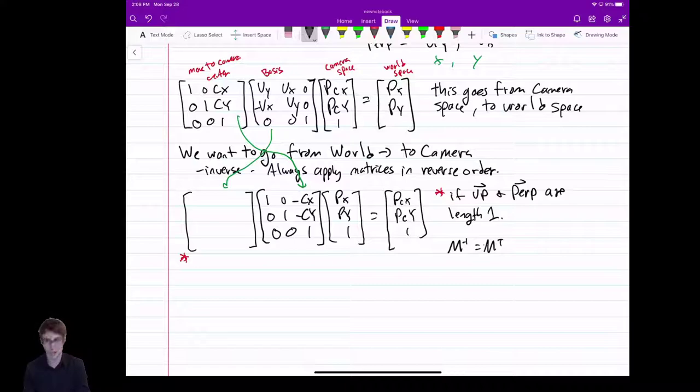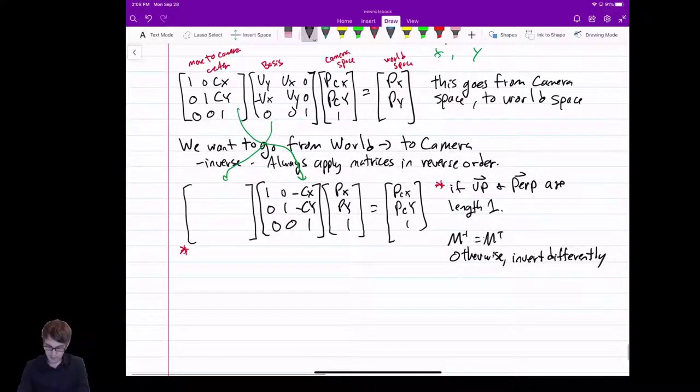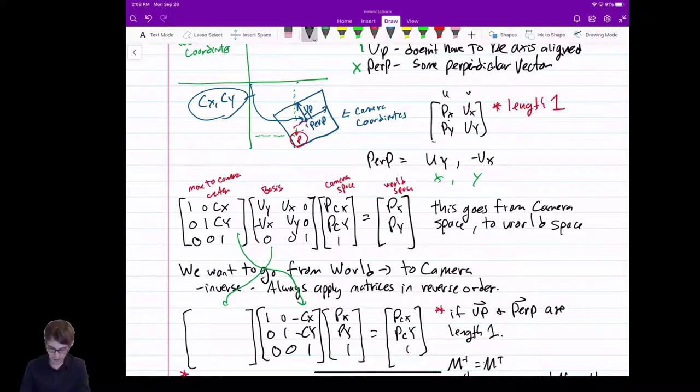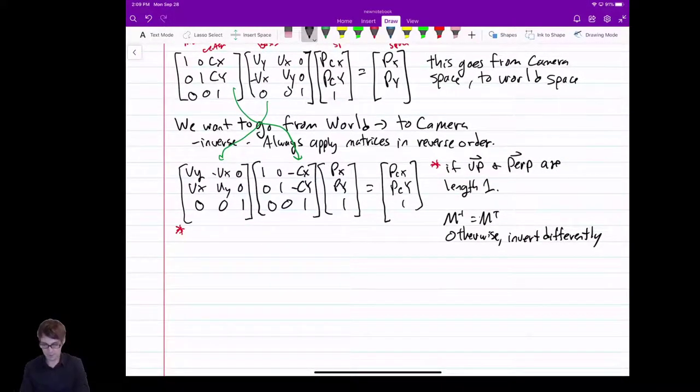So, yeah. If they're length 1, we can just use the transpose. Otherwise, you have to invert differently. Maybe manually, using the math I showed last class or something like that. So then, in that case, if we guarantee, if we know that these are length 1, if we know that, then we just put the transpose in here. So, u, y minus u, x, u, x, u, y. There we go. That's my transpose. Great. In that case, this is my inverted basis matrix in transformation.